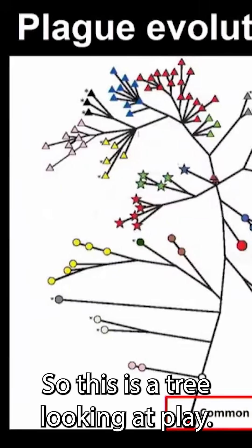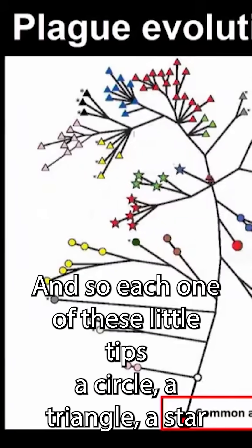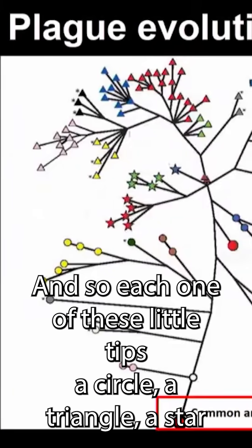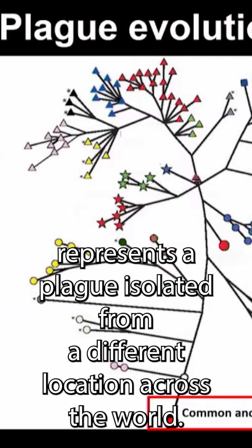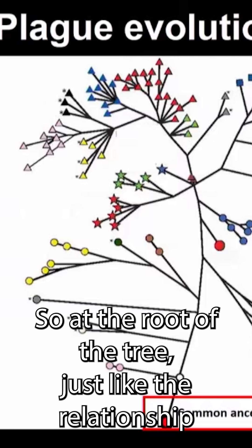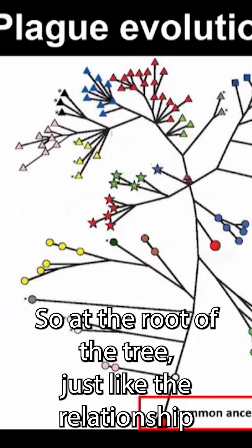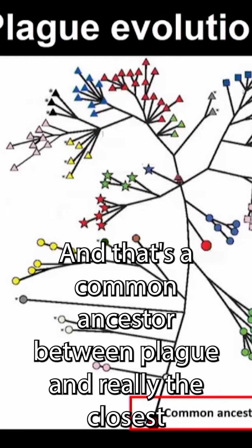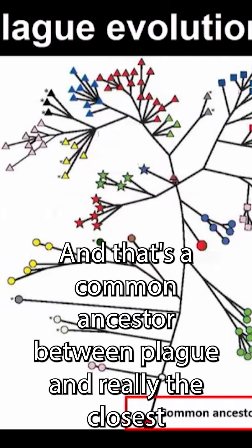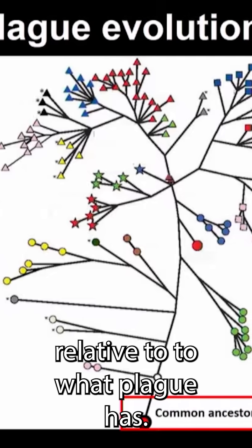So this is a tree looking at plague. Each one of these little tips, a circle, a triangle, a star, represents a plague isolate from a different location across the world. So at the root of the tree, just like the relationship between humans and chimpanzees, we see a common ancestor. And that's the common ancestor between plague and really the closest relative to what plague has.